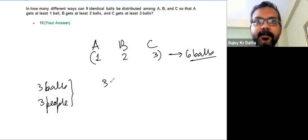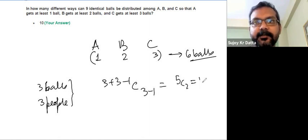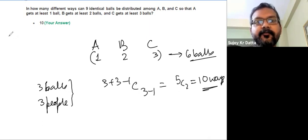Hence the number of ways this can be done is three plus three minus one C three minus one, so five C two. So that's ten ways. The relation we used is the number of ways in which you can distribute n